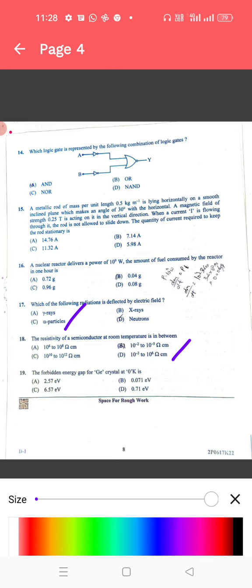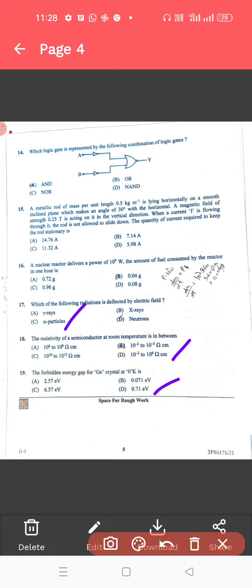For 19, the forbidden energy gap of germanium crystal at 0 degree Kelvin. For 19, the correct answer is 0.71 electron volt.